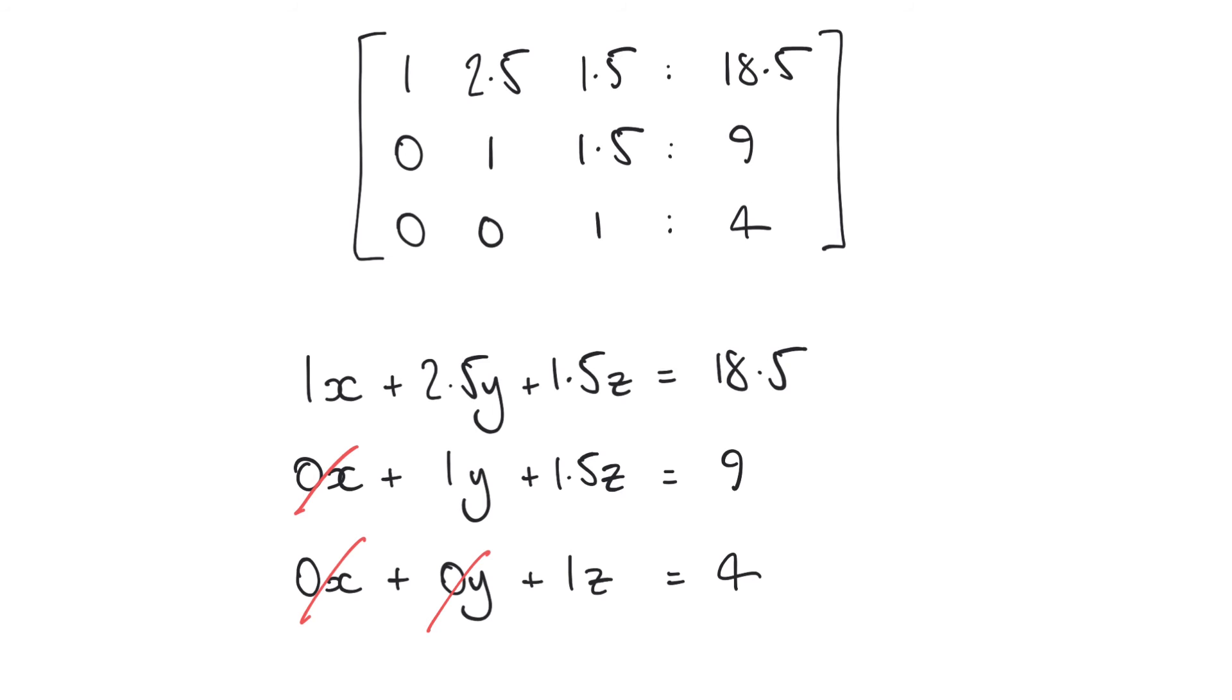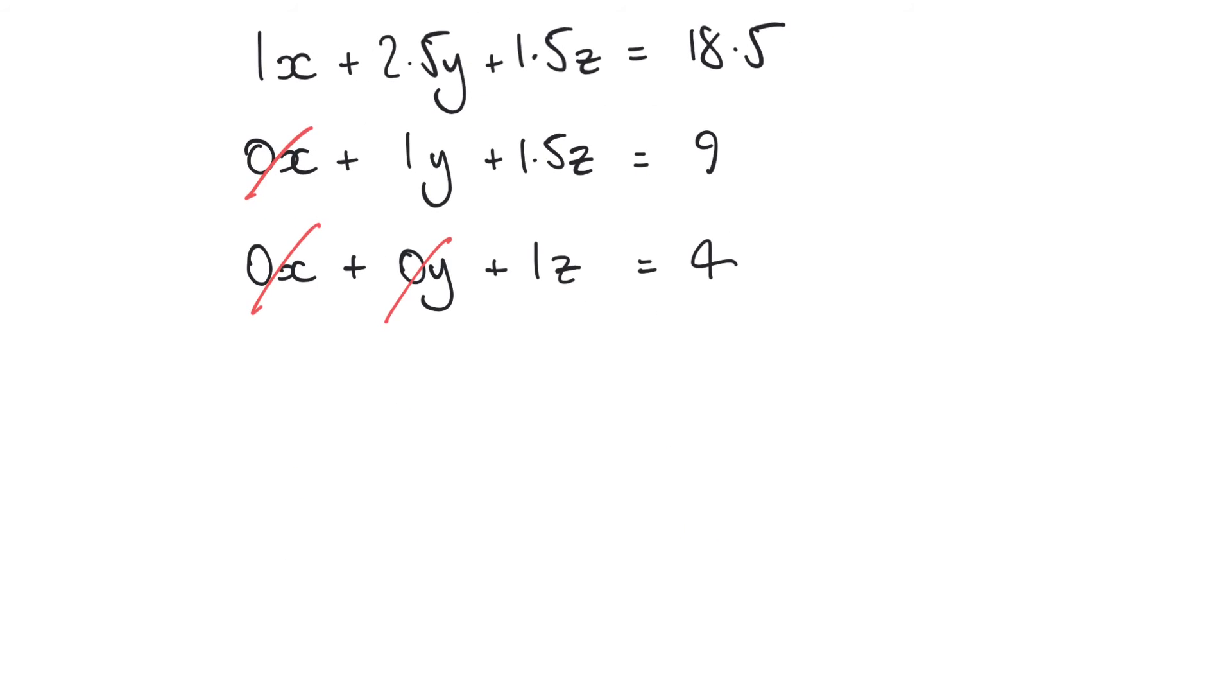And first of all we immediately get our result for z because we have 1z equals 4. And so knowing this we can substitute this into our second equation here because we're told that y plus 1.5z equals 9. Well we know the value of z now, z equals 4, and so y plus 1.5 times 4 is equal to 9 and we can solve that to find that y equals 3.